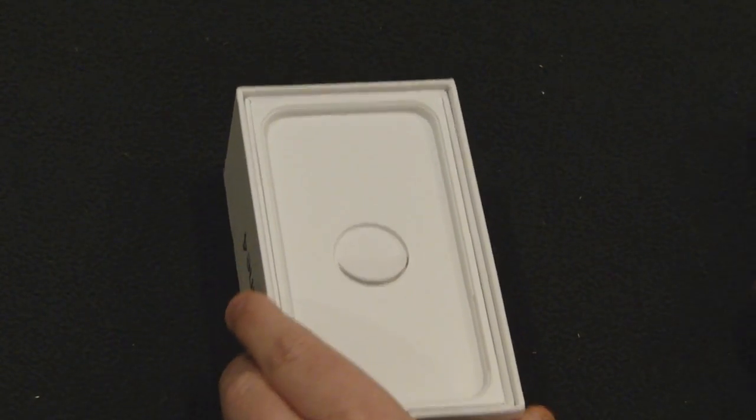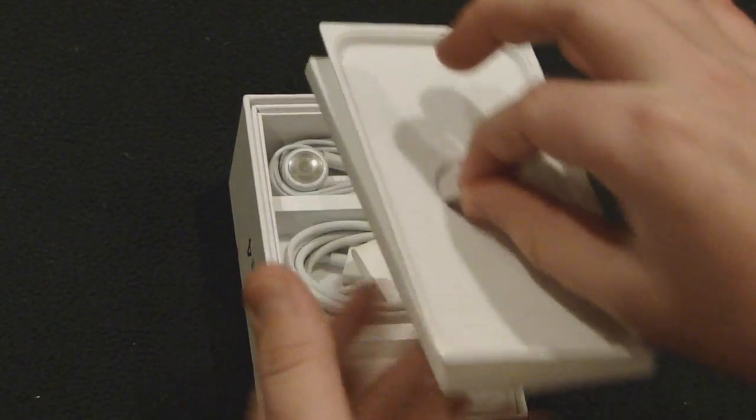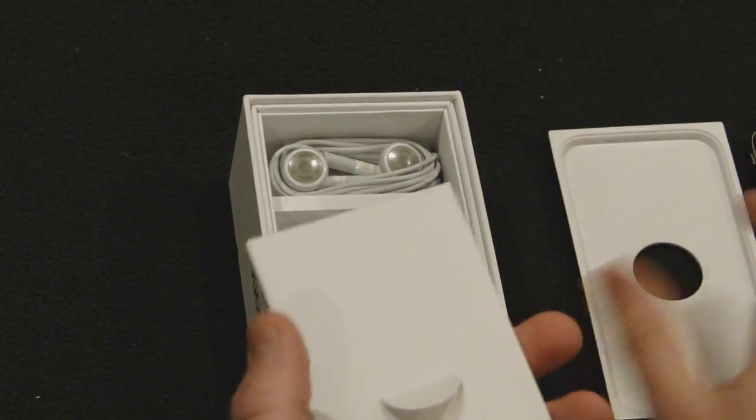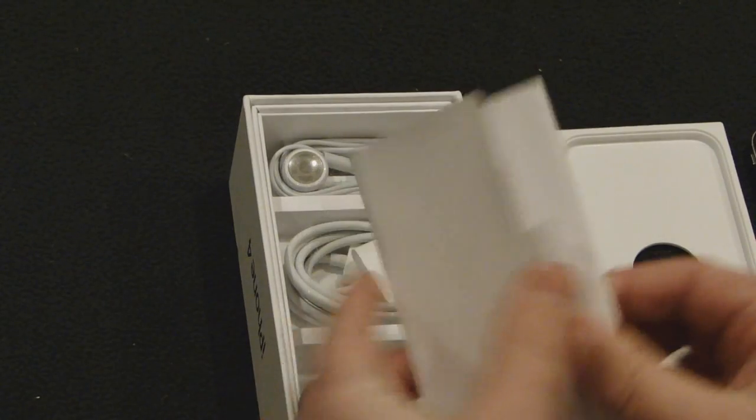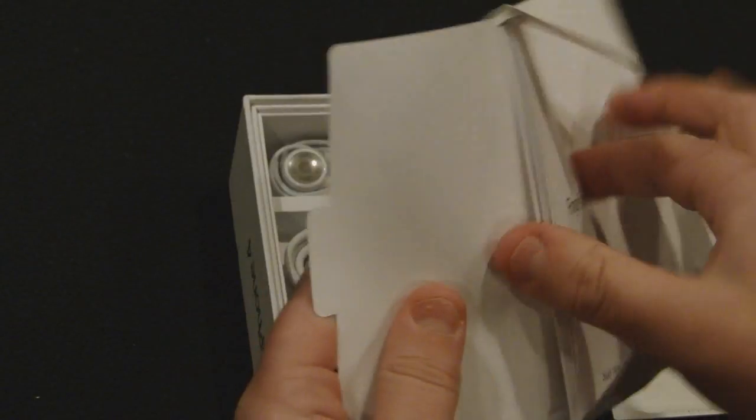All right, let's set this aside and let's get into the rest of the box. So right here, you want to pull up on the tab. Take this plastic thing off. Set that to the side. You're greeted with a bunch of information right here. This information you might want to read.